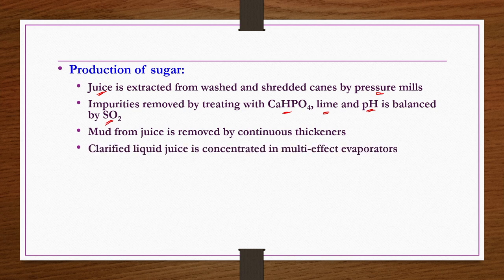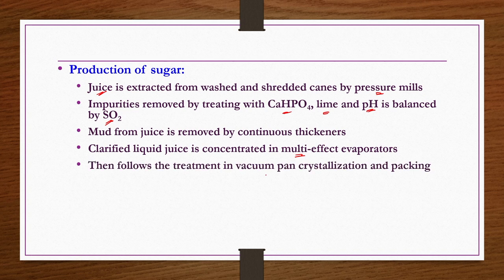Clarified liquid juice from the thickener has 80 to 85 percent water. Though it is sufficiently pure, it is diluted, so that water content is reduced to 40 to 45 percent by multi-effect evaporators. Once this step is done, the juice is further treated in a vacuum pan followed by crystallization and packing. These are the main steps involved in the production of sugar that we have seen.